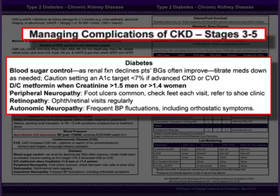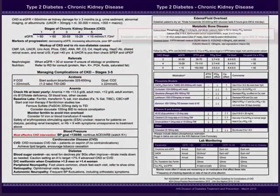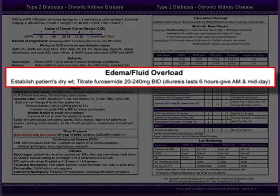Ensure that your patients are getting their eyes evaluated at least annually and more often if indicated. Autonomic neuropathy also progresses. It can create frequent blood pressure fluctuations, including orthostatic symptoms, making blood pressure control especially problematic. In the later stages of CKD, fluid balance becomes more of an issue. This usually requires treatment with a loop diuretic such as furosemide, which can be titrated up as needed to achieve fluid balance.